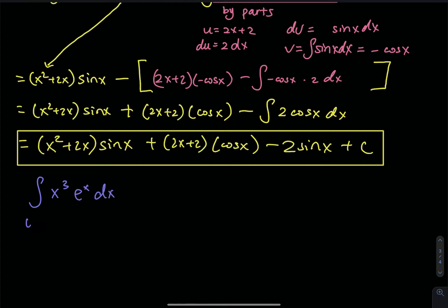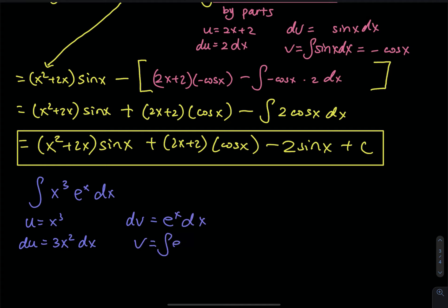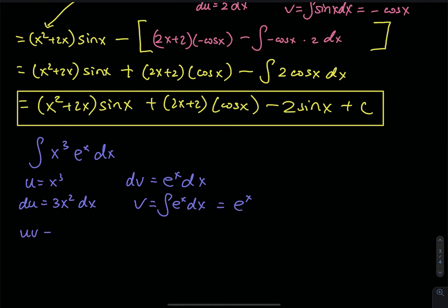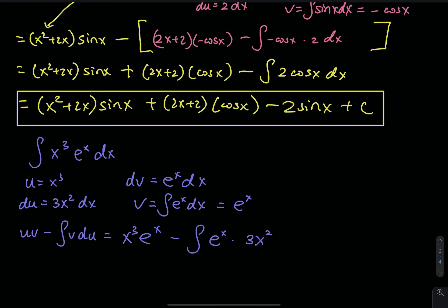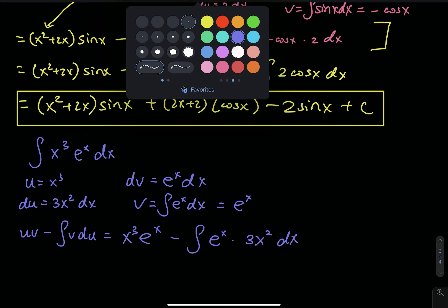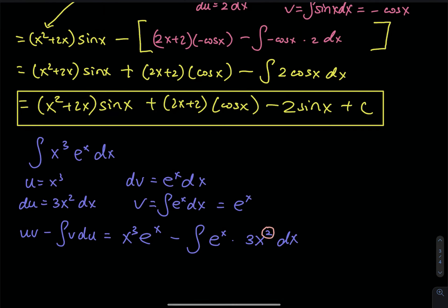First of all, we let u equals x to the third, and then du equals 3x squared dx. And then dv equals e to the x dx, and then v equals the integral of e to the x dx, which is still e to the x. Then uv minus the integral of v du gives us x to the third e to the x minus the integral of e to the x times 3x squared dx. So this 3x squared calls another integration by part.